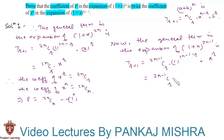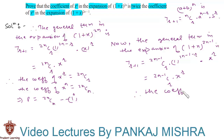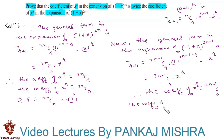So we can say that the coefficient of x raised to n is equal to (2n minus 1)Cn. Let us call it q. So we have q = (2n minus 1)Cn. This is our second equation.